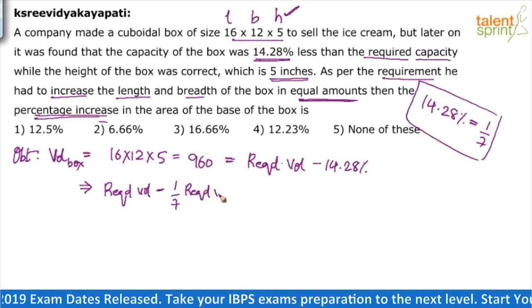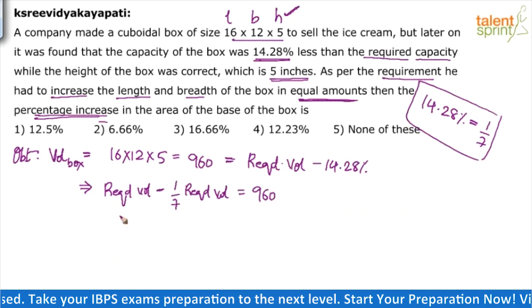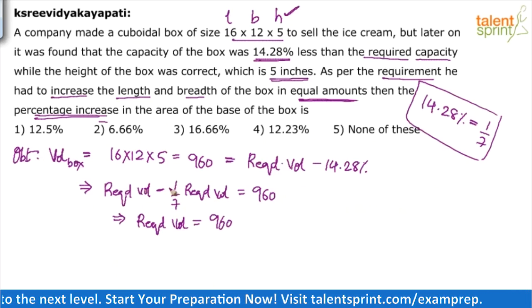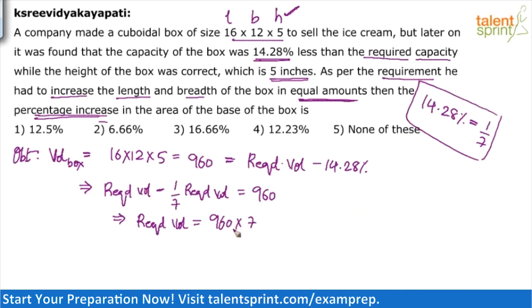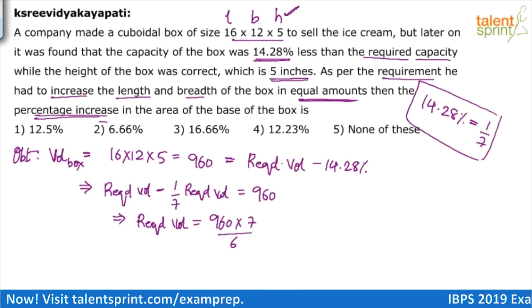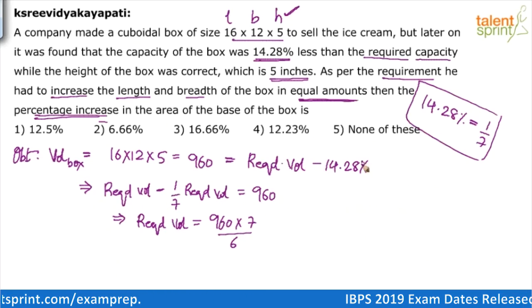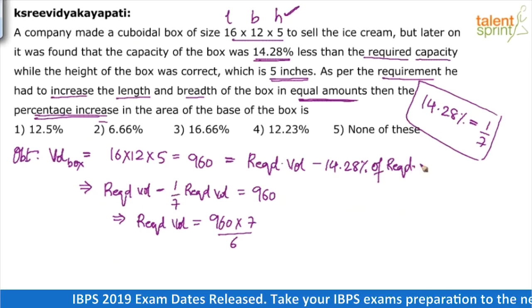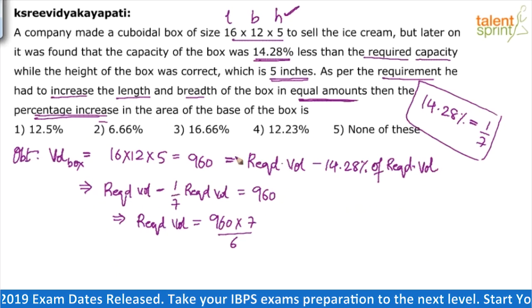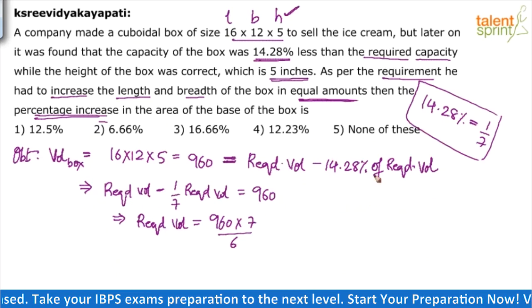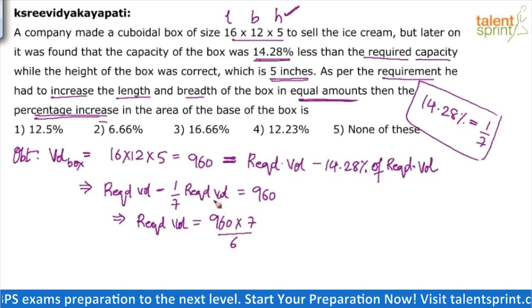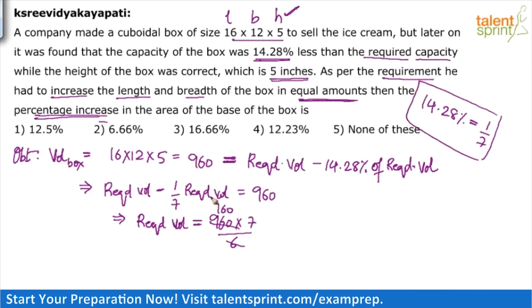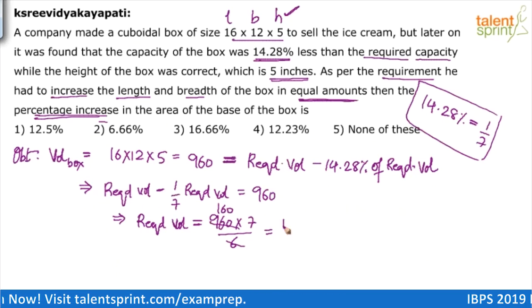So 1/7th of the required volume equals 960. The required volume comes out to 960 × 7/6. You can write this directly without many steps: since it is 14.28% less, 14.28% — which is 1/7 — of the required volume is the difference. So directly write 960 × 7/6. Simplifying: 960 ÷ 6 = 160, and 160 × 7 = 1120. The required volume is 1120.